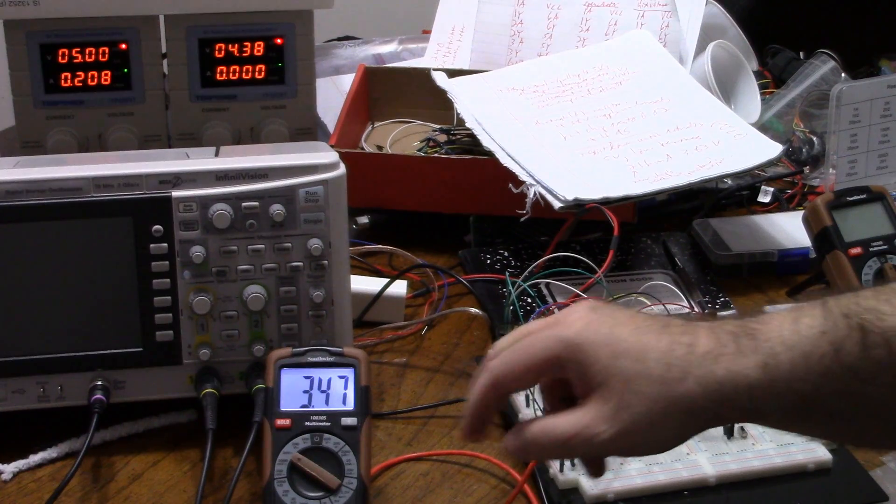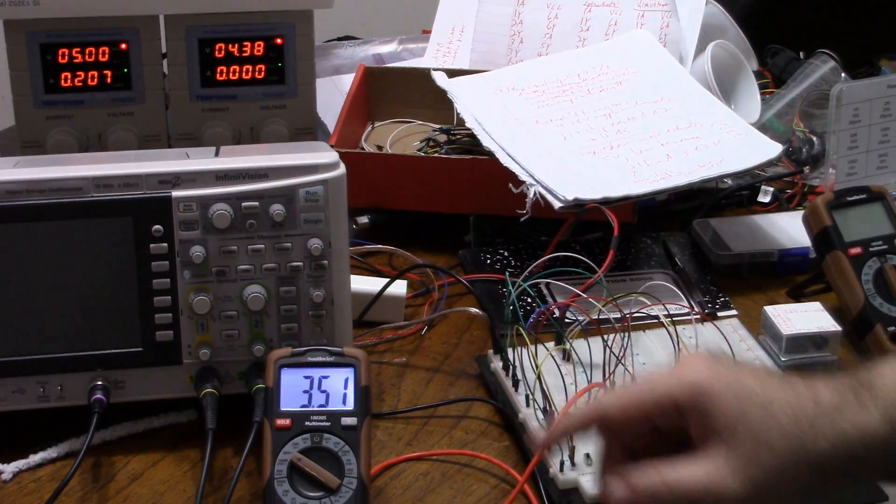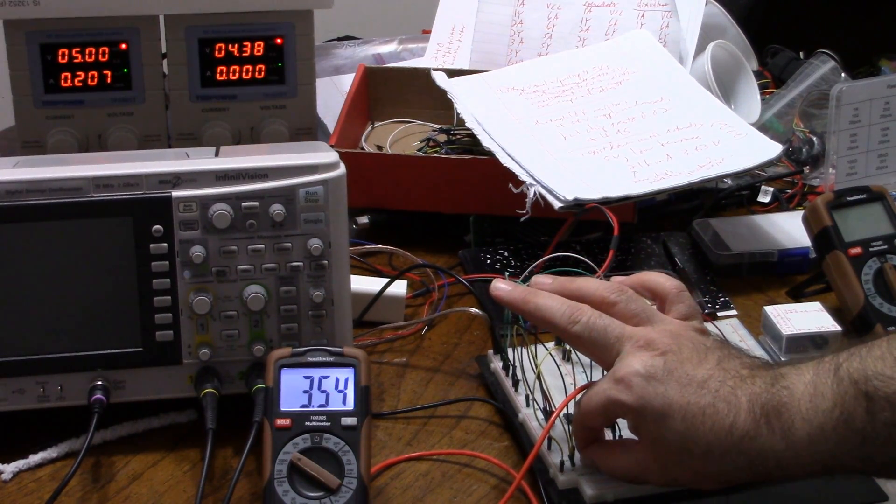What about the low? Oh, the low is 3.48 volts with 207 milliamps going through the chip. Oops.